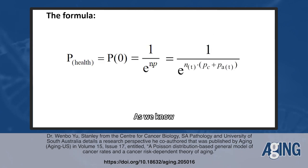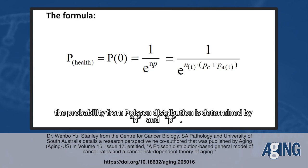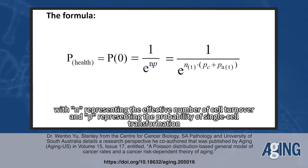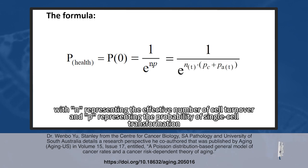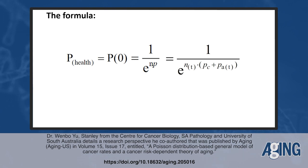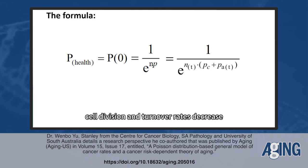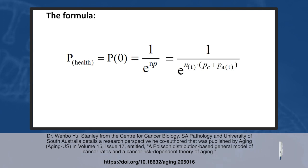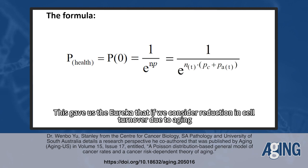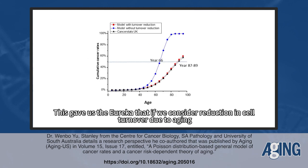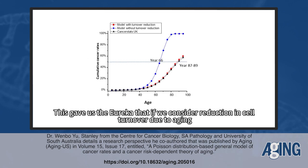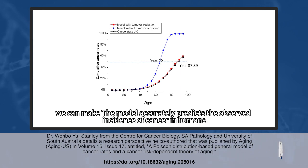The probability from Poisson distribution is determined by N and P, with N representing the effective number of cell turnover, and P representing the probability of single-cell transformation. Many studies found that as people age, cell division and turnover rates decrease. This gave us the eureka moment: if we consider reduction in cell turnover due to aging, we can make the model accurately predict the observed incidence of cancer in humans.